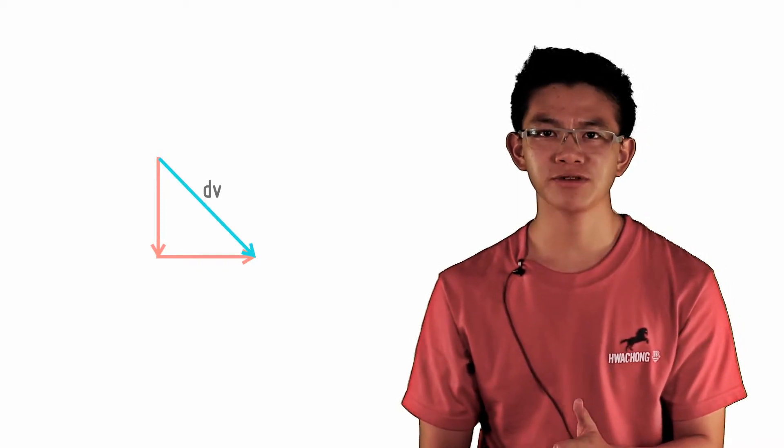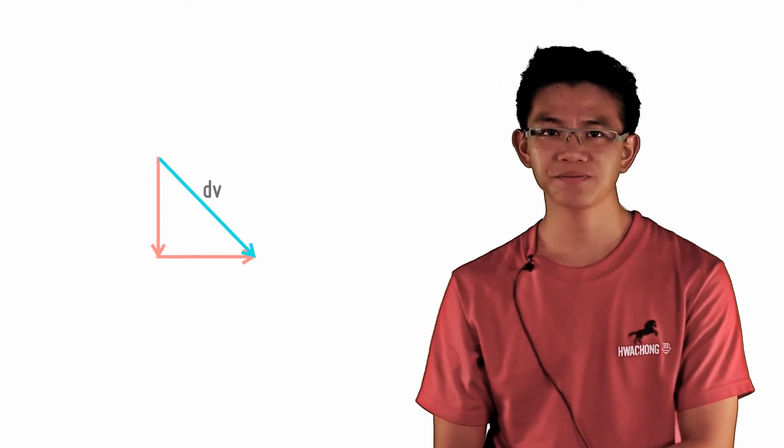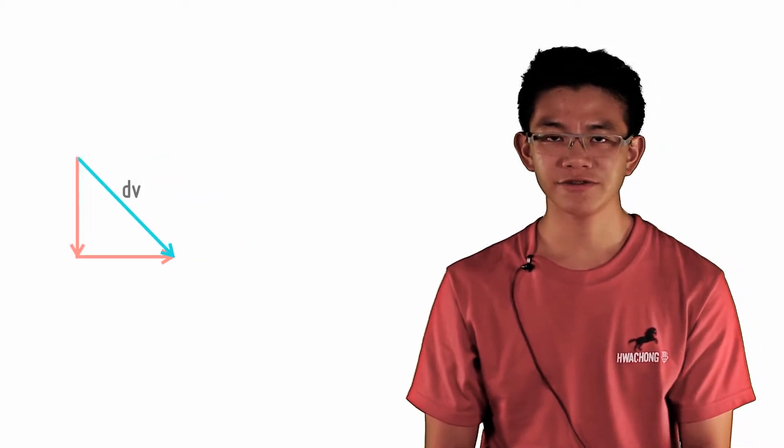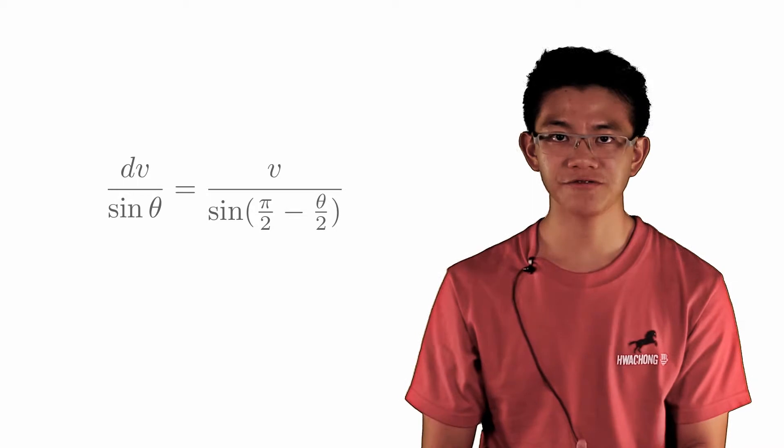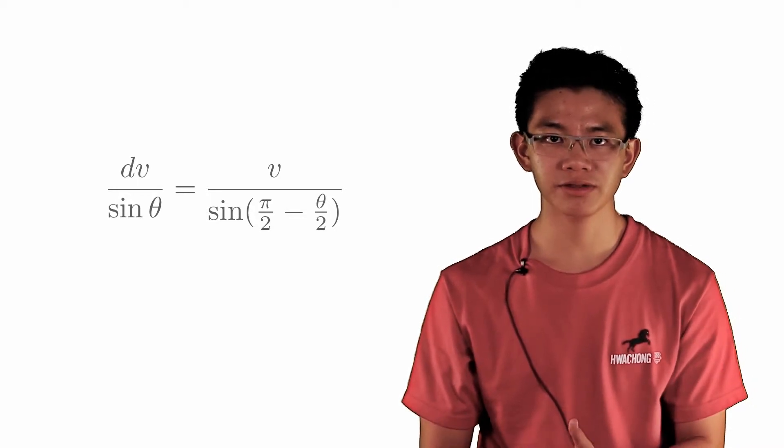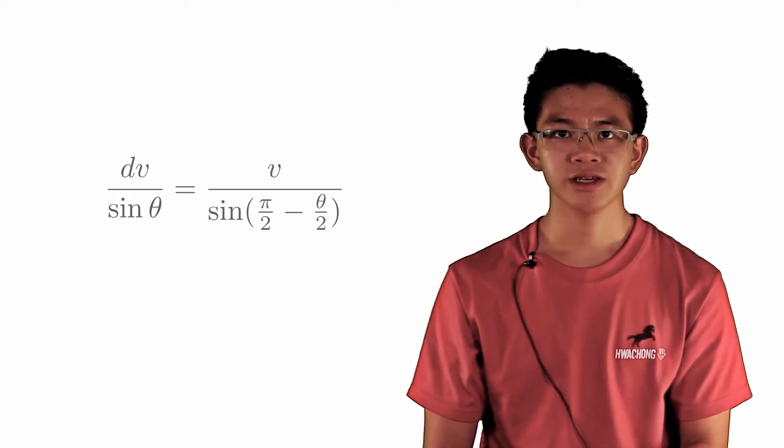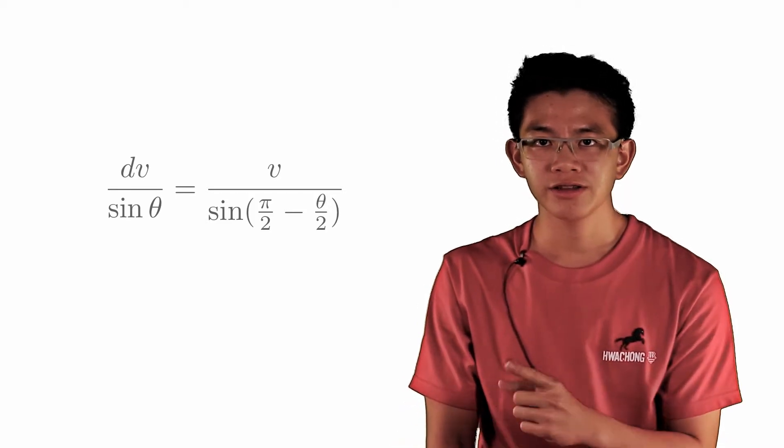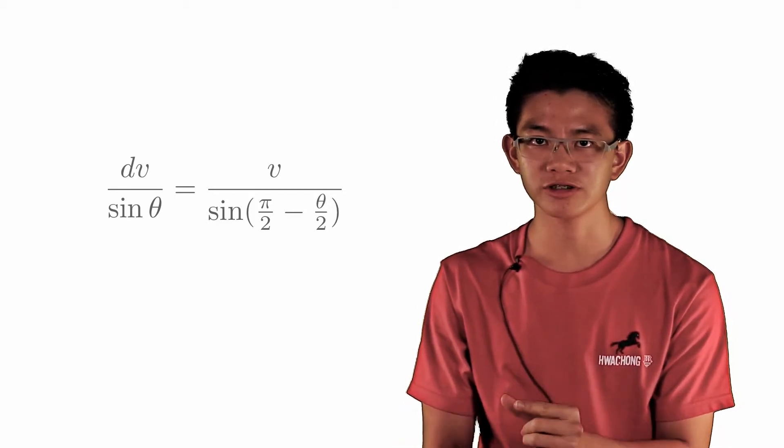Notice how delta v points toward the center of the circle. And by manipulation of the sine rule, delta v over sine theta equals v over sine pi over 2 minus theta over 2. Take note, this is in radians, and we are taking a small portion of the circle.